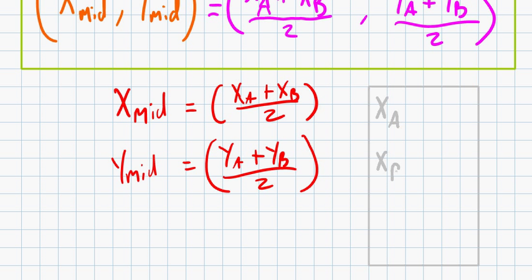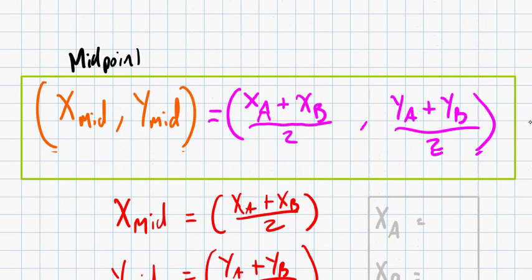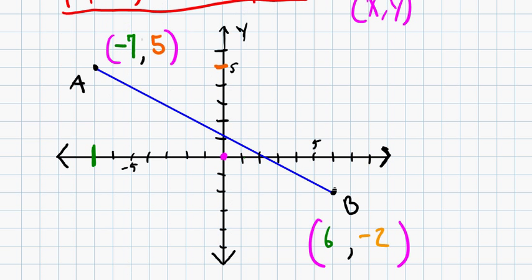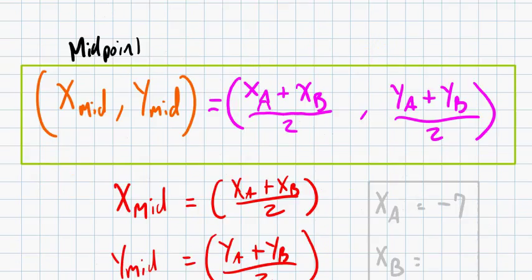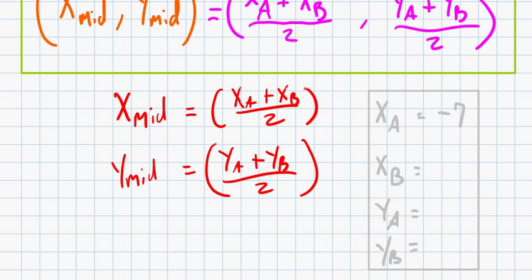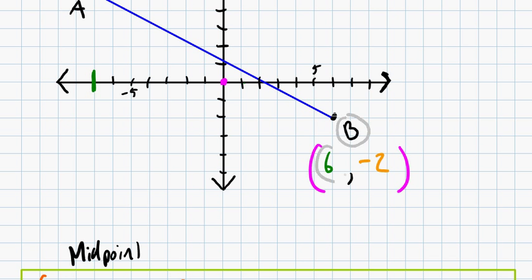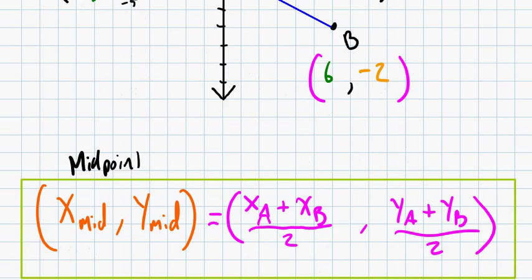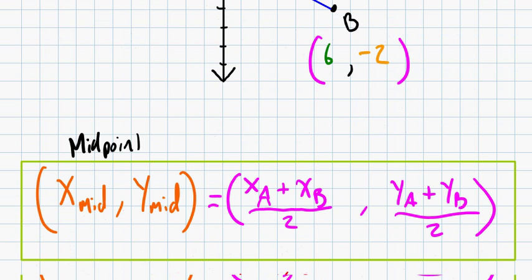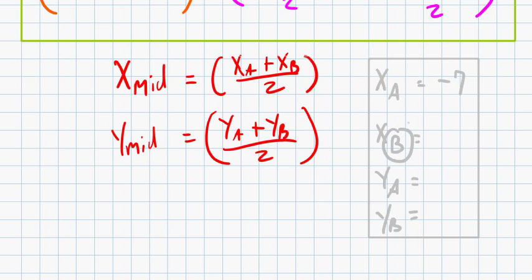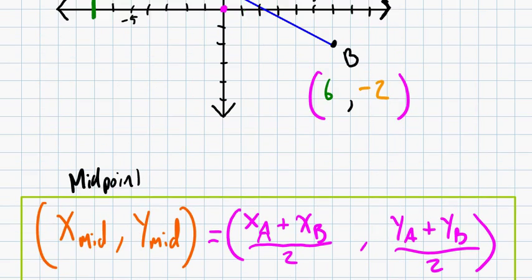Alright, so x_A is going to be negative 7. Remember, that's what we found. That's the x-coordinate of point A. So I just go ahead and put negative 7 in there. Now I want to find x_B. So I go ahead and I go to point B, and I look for its x-coordinate, which is 6. Remember, the x-coordinate is going to be the first coordinate, not the second coordinate. And I know I'm looking for point B because that's what I have there. So that was going to be 6, x_B equals 6.